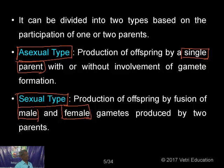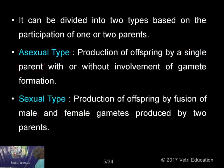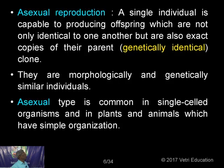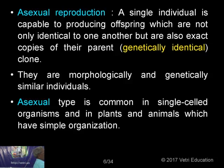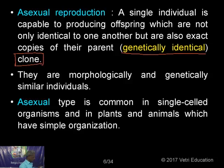The union of male and female is the most essential element of sexual reproduction. In asexual reproduction, a single individual produces offspring that are not only identical to one another but also exact copies of the parent — they are genetically identical. When an organism produces genetically identical individuals, we use the term clone.